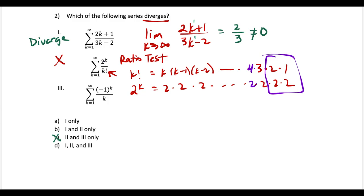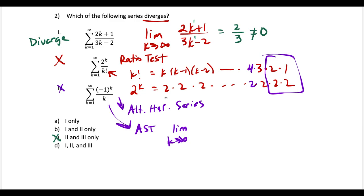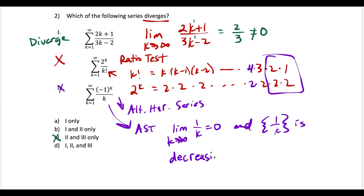Roman numeral III, you may recognize as the alternating harmonic series, which is known to converge. If I had to argue it formally, I would use the alternating series test — showing that the limit as k goes to infinity of 1/k equals zero, and that the sequence 1/k is decreasing. So Roman numeral I is the only one that diverges, and choice A is our answer.